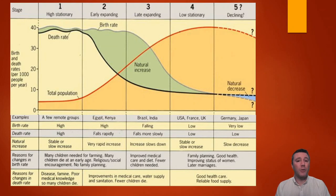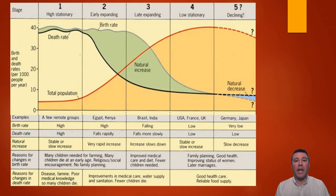Back in 2004, a group within the UN provided population estimates for the year 2300, ranging from 2.3 billion to just over 36 billion, depending on growth rate. They even included an extremely unrealistic — literally impossible, perhaps even laughable — estimate based on the fertility rates of the late 1990s: 134 trillion.